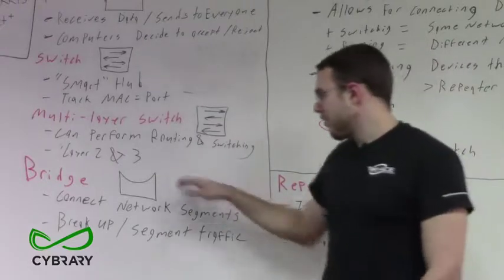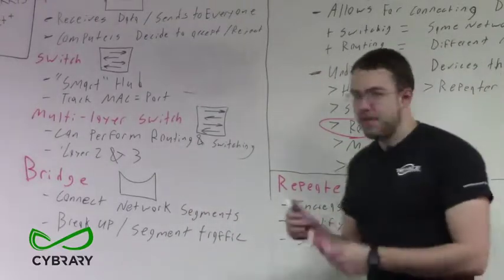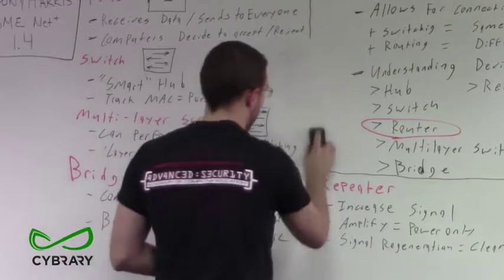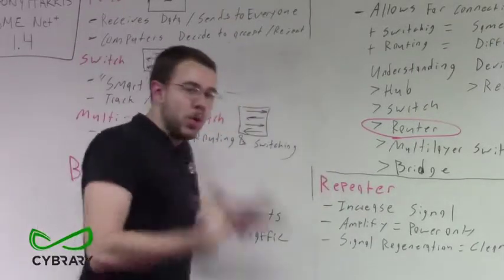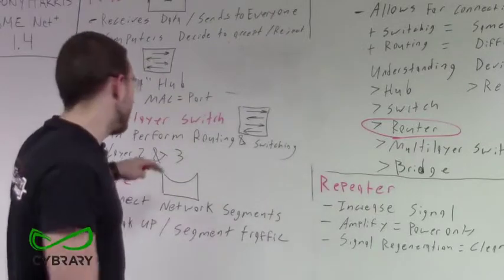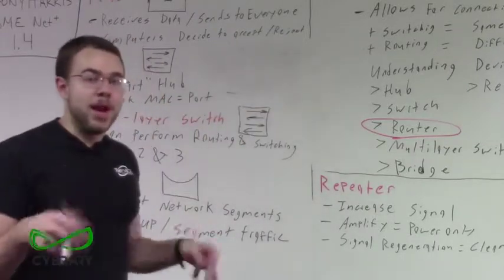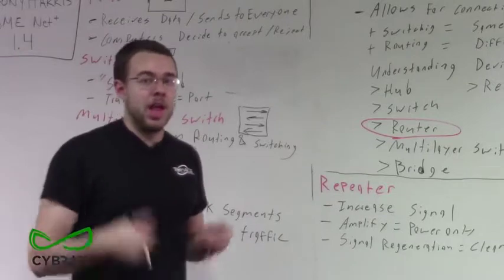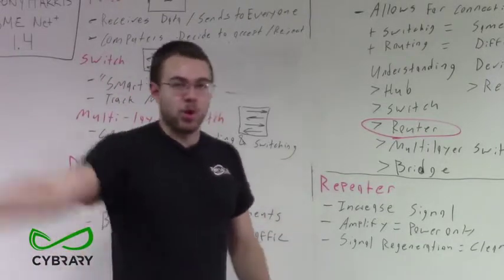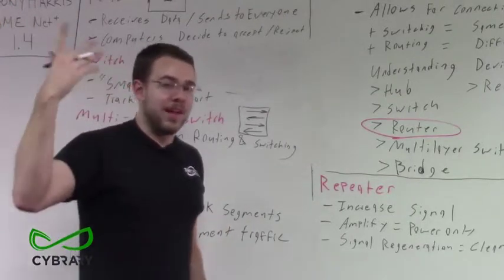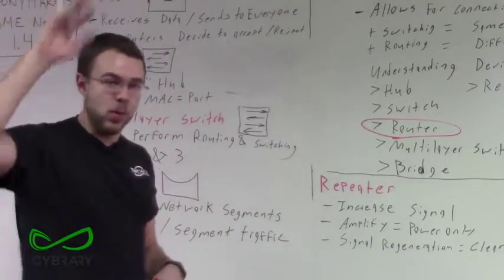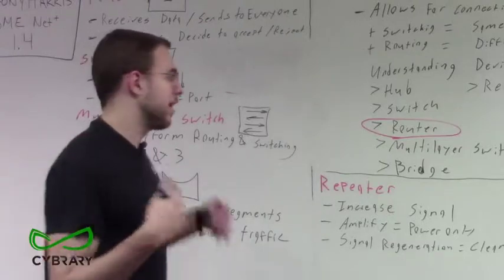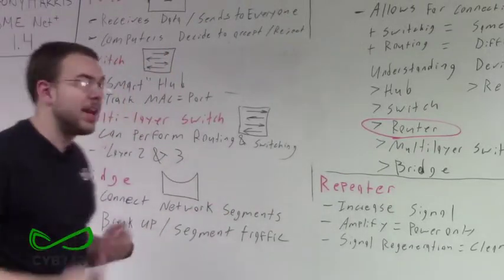Our bridges connect network segments. If we have a large network, we may not want all devices connected to a single switch, especially across multiple floors of a building. Cables going from the first floor to the fifth floor may not even be able to carry a signal across that length without an additional device. Our bridges allow us to connect these different network segments.